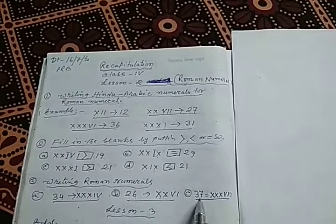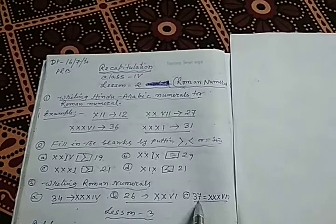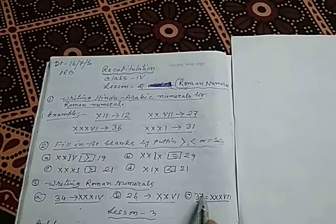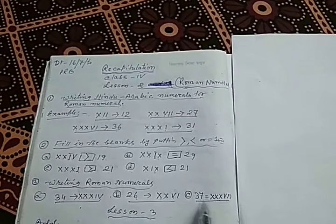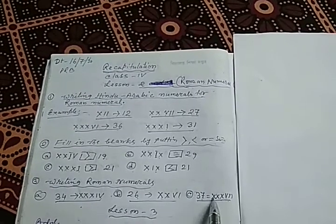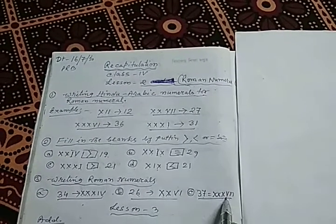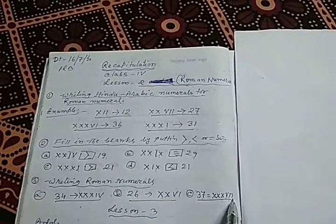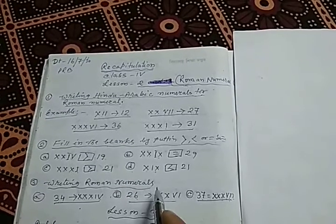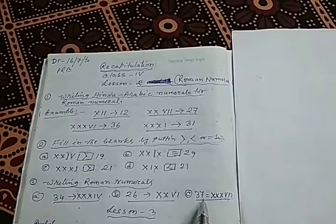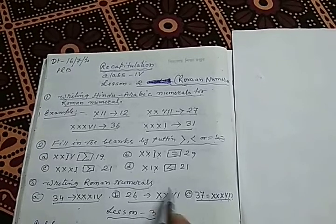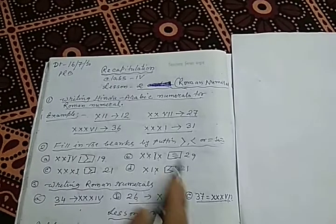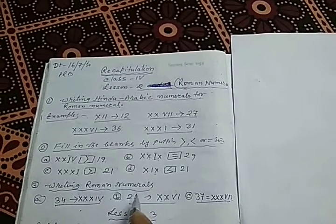In example C, 37 is given as the Hindu-Arabic number and you have to write it in Roman numerals. That is: 10 plus 10 plus 10 equals 30, plus 5 equals 35, then 36 and 37. You will recap all these sums from your classwork copy. You need not write anything; all these sums are already done before the summer vacation. You will just recap it.